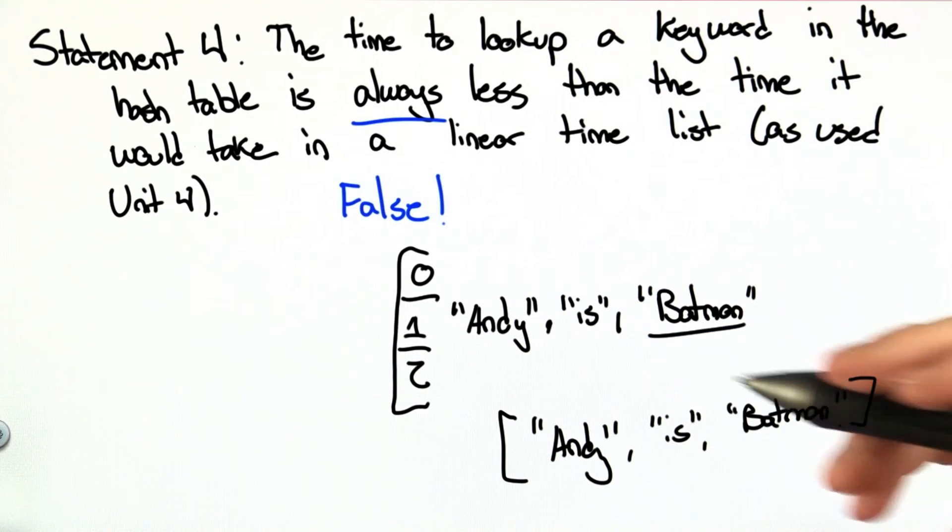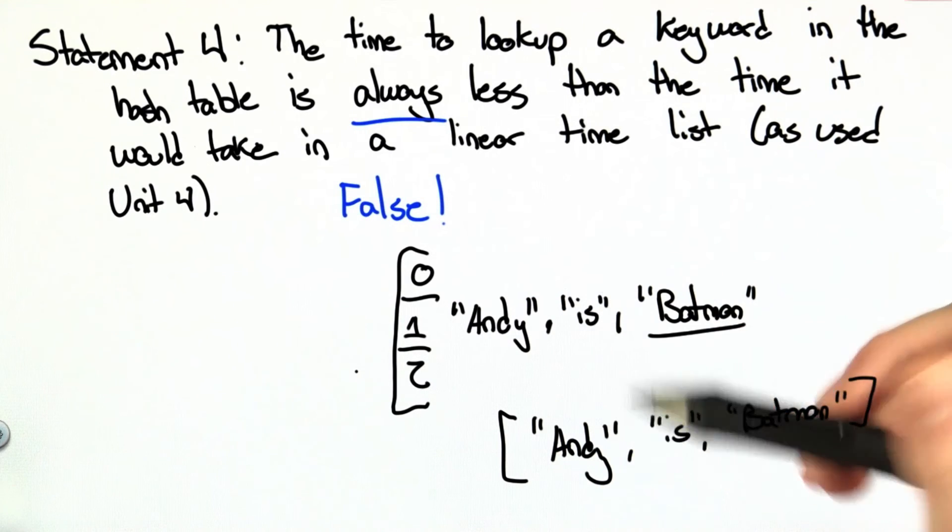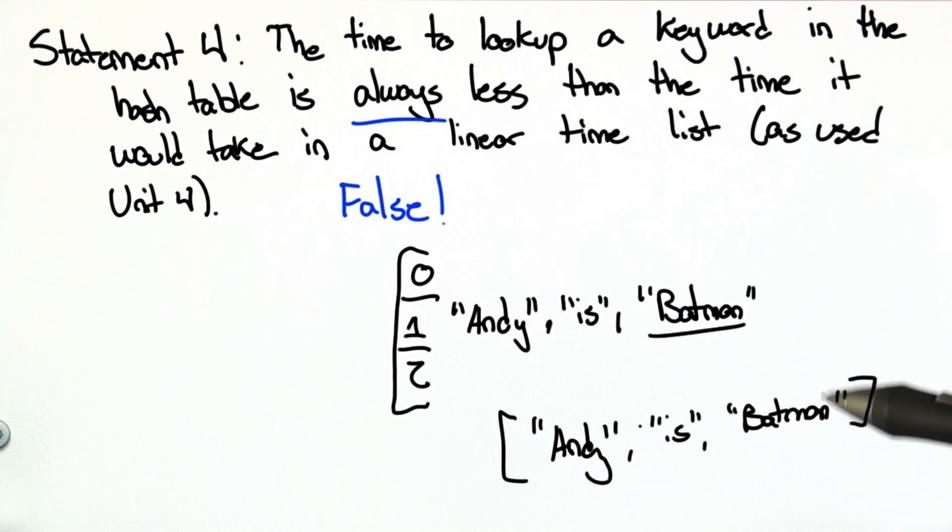That's essentially the same as a normal list where we just start from the beginning, without doing any kind of hash function, and just go through each item one by one searching for Batman.